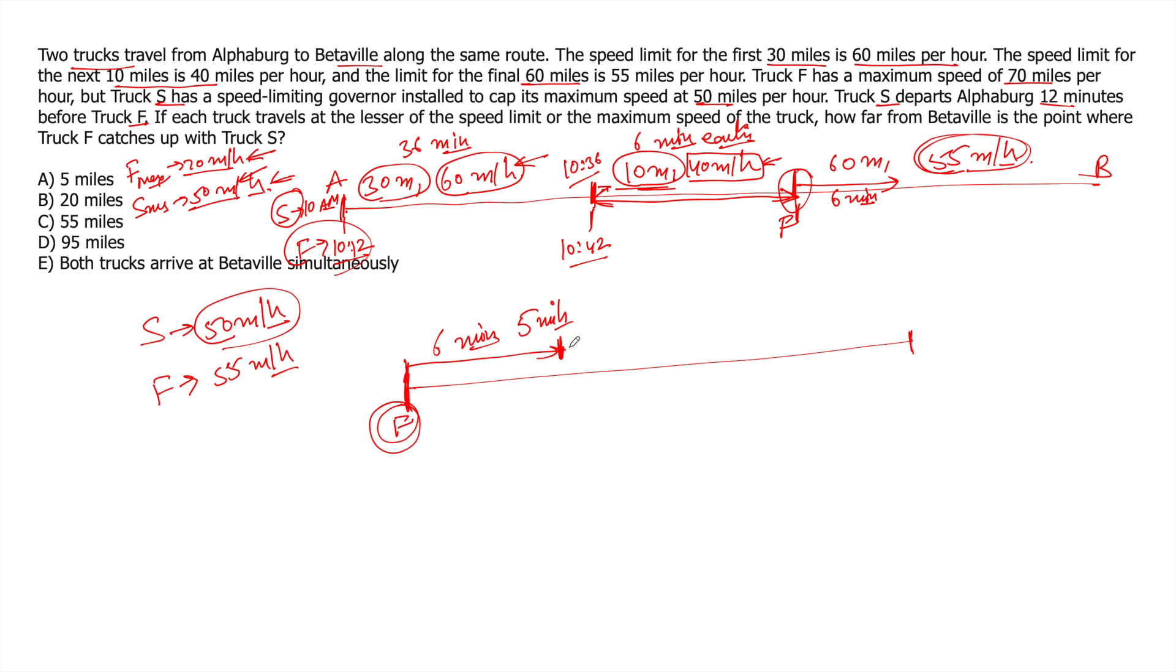Now it becomes a simple case of somebody is five miles ahead and difference of speeds is so and so. So it will take one hour. F will take one hour to catch S. So F after entering this point will take one hour. So in one hour, F travels 55, the speed is 55 miles. So F would cover 55 miles and reach this point five miles ahead of the final point B. So that's your answer.